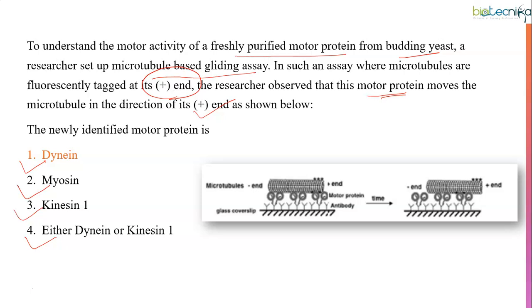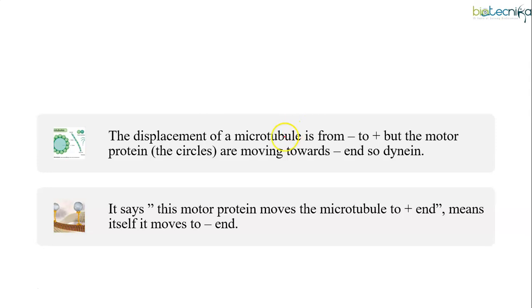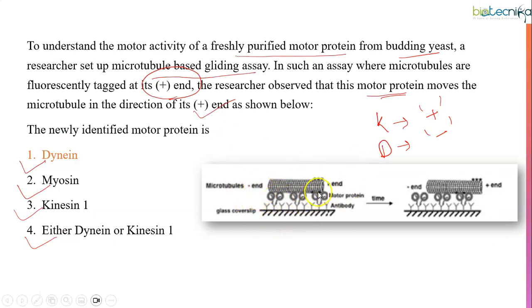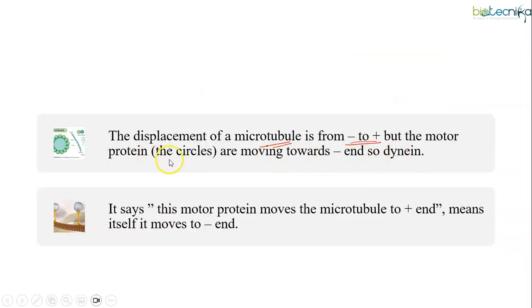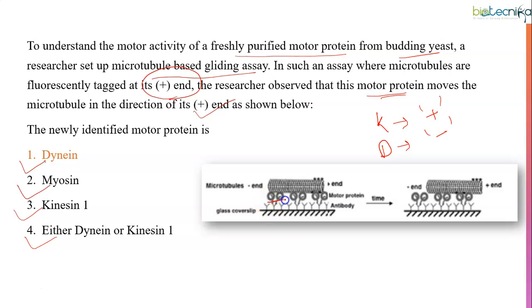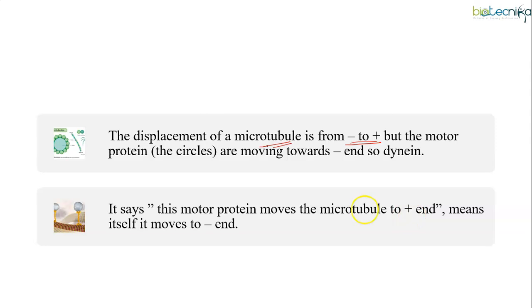How is dynein the correct answer? We know kinesin moves towards the plus end, dynein moves towards the minus end. As you can see in this image, the displacement of microtubule is from minus end to plus end - that is true, the microtubule is moving from minus end to plus end. But the motor protein, the circles, are moving towards the minus end. So that's why the correct answer is dynein. It says this protein moves the microtubules to plus end, means itself it moves towards the minus end. They are asking the direction of motor protein, so the answer is minus end, that is dynein protein.